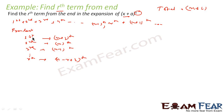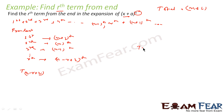So the rth term from the last is the (n − r + 2)th term. We can validate: for r = 1, n − 1 + 2 = n + 1 ✓; for r = 2, n − 2 + 2 = n ✓; for r = 3, n − 3 + 2 = n − 1 ✓. So the rth term from the end equals T(n − r + 2). We write this as T((n − r + 1) + 1), since we only know the formula for T(k + 1).